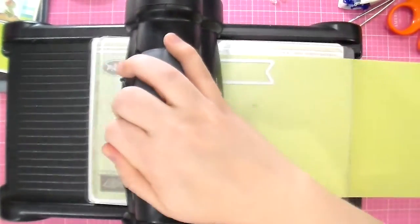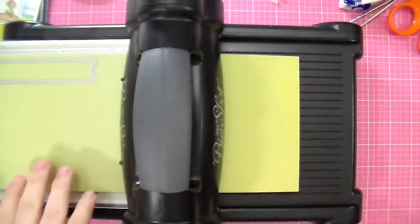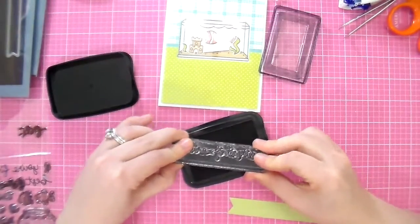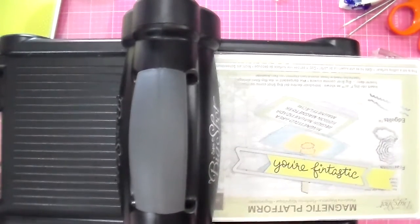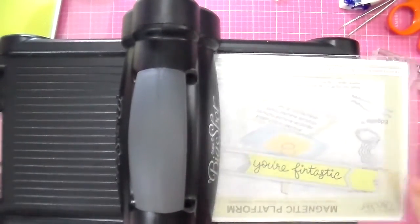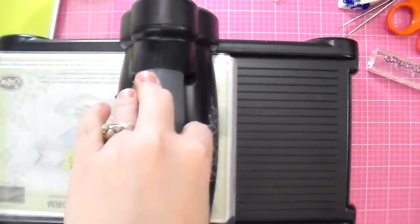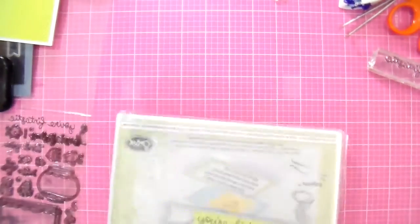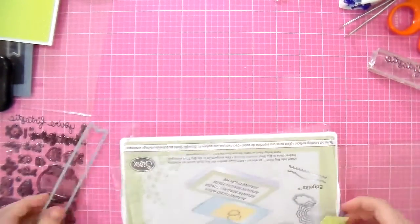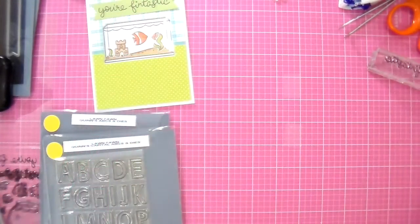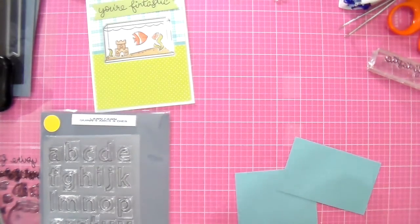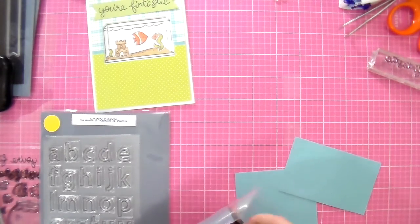So now I am using the new banner dies from Lawn Fawn. And I used the You're Fantastic from the stamp set. And I stamped that onto the banner. And I took the banner and I put the die over the banner again and ran it through my die cutting machine just so I could still get that fish tail look on the other side of the banner. But I wanted the banner to be a little bit shorter than what the die made.